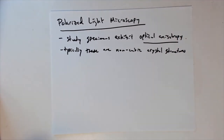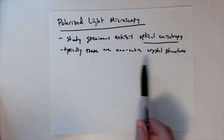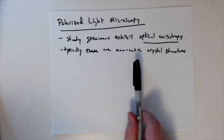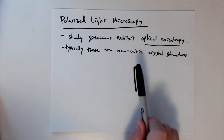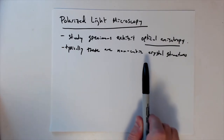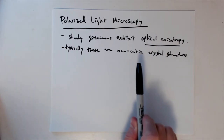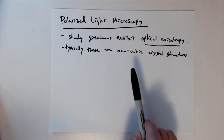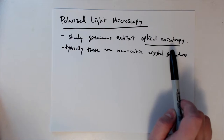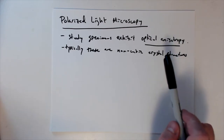This is useful when we have non-cubic crystal structures because cubic systems have a lot of symmetry and tend to be isotropic — the same in all directions — whereas non-cubic structures have more optical anisotropy. So this is what polarized light microscopy is going to be useful for.